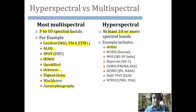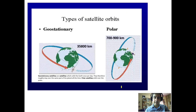Hyperspectral sensors have more than 10 bands, and examples include MODIS, MERIS of ENVISAT, MOS of IRS (Indian Remote Sensing Satellite) 3P, Hyperion EO-1, CHRIS, AVIRIS, DAIS, and HYDICE, which belongs to the USA.